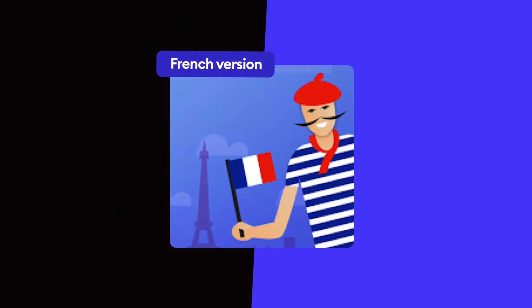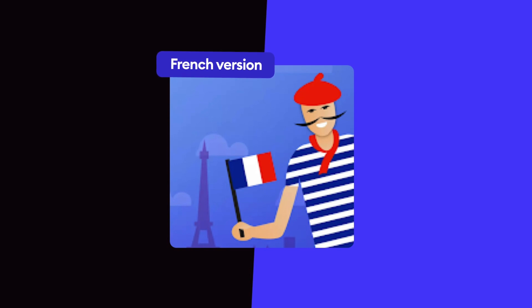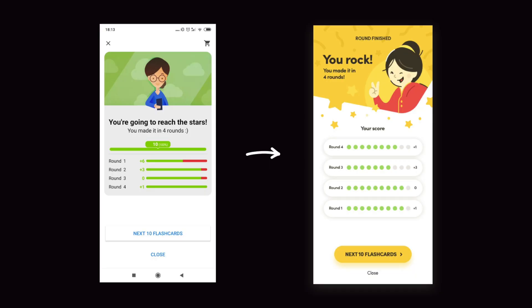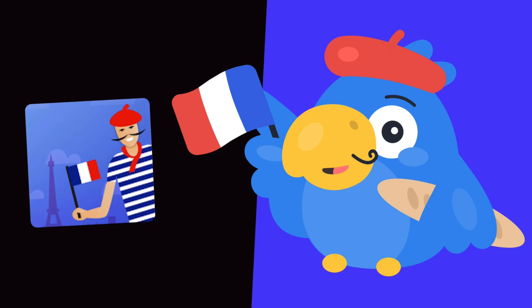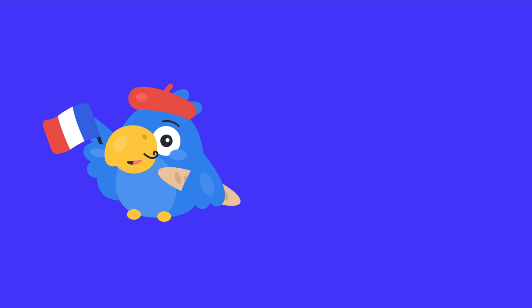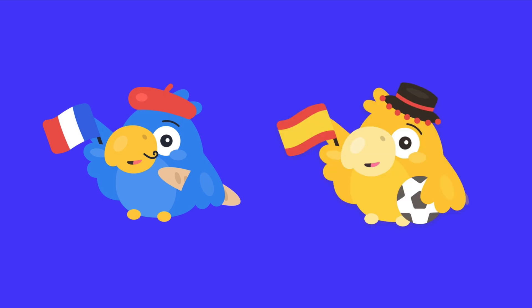We started by rethinking the guiding character. The app used a stereotypical person from each country as the main illustration and guide. We decided a more rounded, friendly character would work better and played around with a couple of ideas before settling on a parrot. Parrots are well known for repeating what people say, which is basically what the app is about. But parrots are also colorful, which was a perfect way for us to rebrand the app for different languages because it's a white label app.